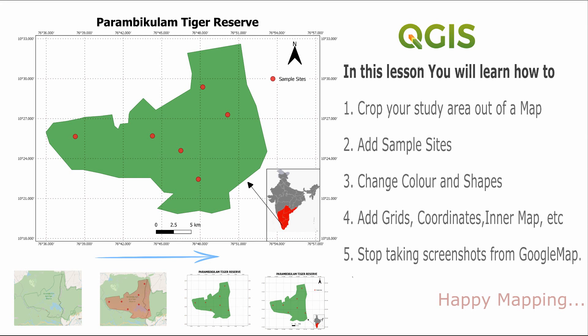Hello everyone, this is Madaraj and today I'm going to teach you how to prepare a good-looking study area map using QGIS, which is an open-source free software. Here you can add coordinates, grids, legends, north arrow, and many other things in your map, and it will look much better than screenshots you take from Google Maps and Google Earth. Please get the latest version of QGIS from the download link in the description below.